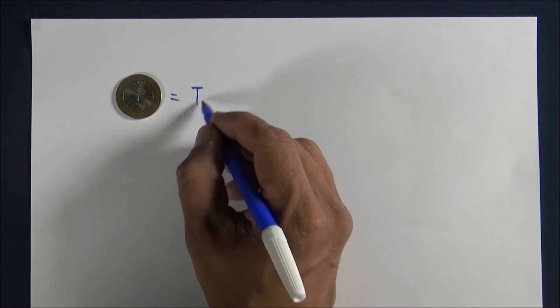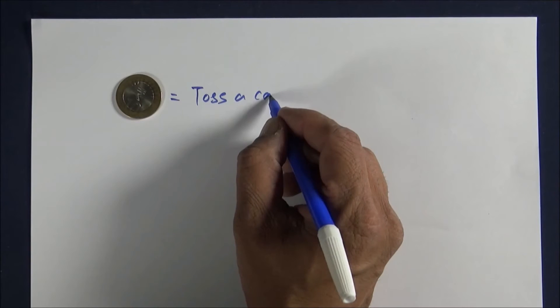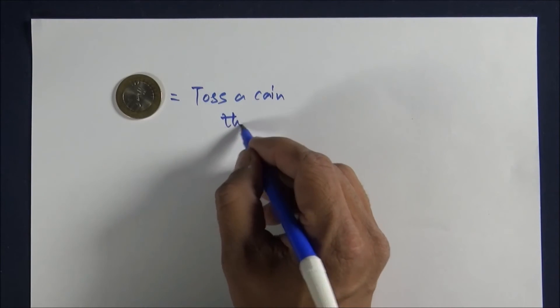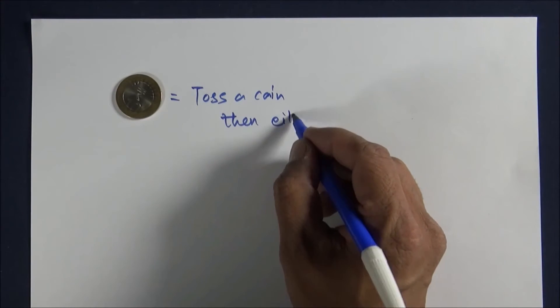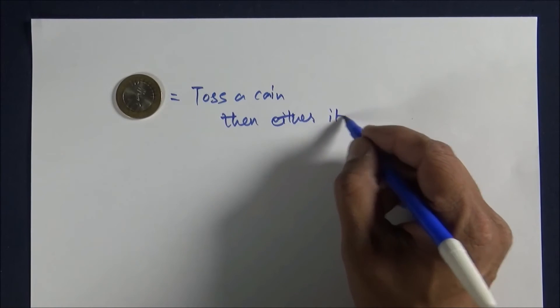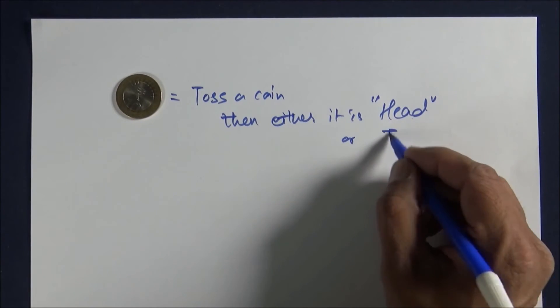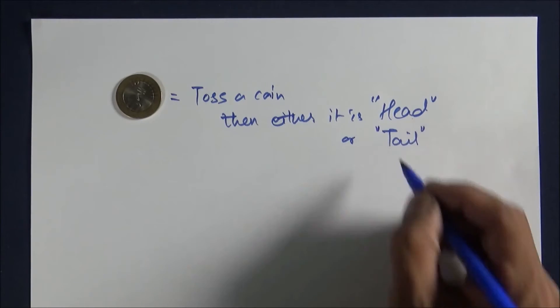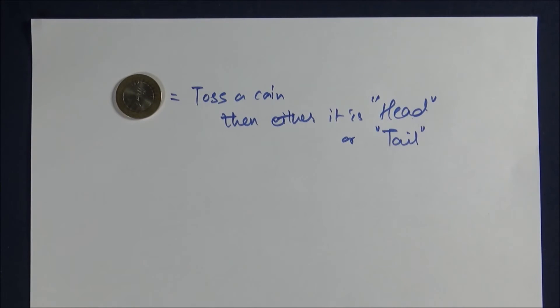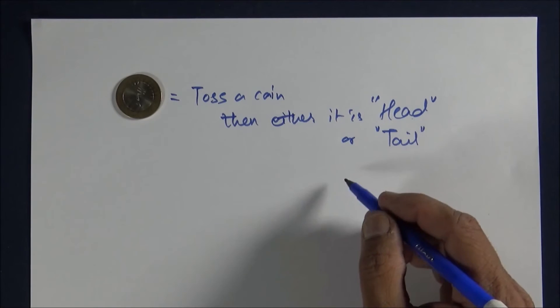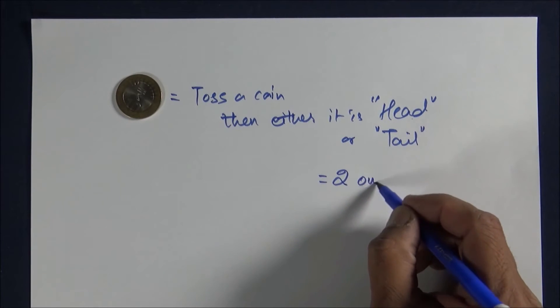So if you toss a coin, then either it will be heads or it will be tails. So either we get heads or we get tails. That is how many outcomes? We get two outcomes.